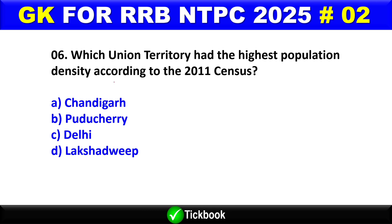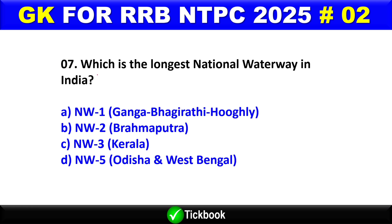Question number 6: Which union territory had the highest population density according to the 2011 census? Option C is the right answer — Delhi. Question number 7: Which is the longest national waterway in India?